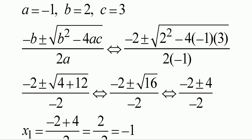You know that whenever you're asked for the solutions or for the roots, you use the formula: negative b plus or minus square root of b squared minus 4ac — the whole thing divided by 2a.